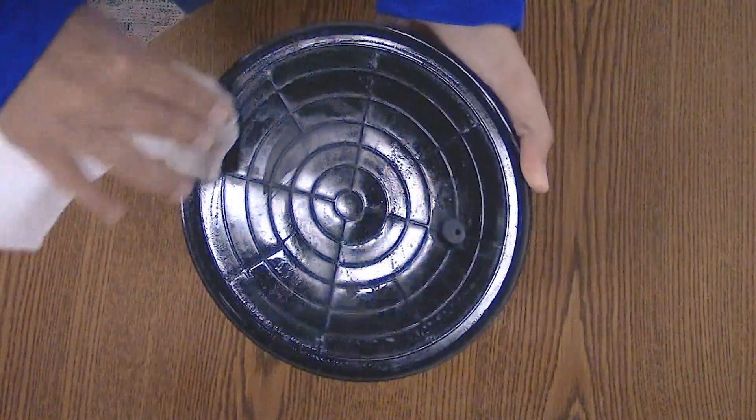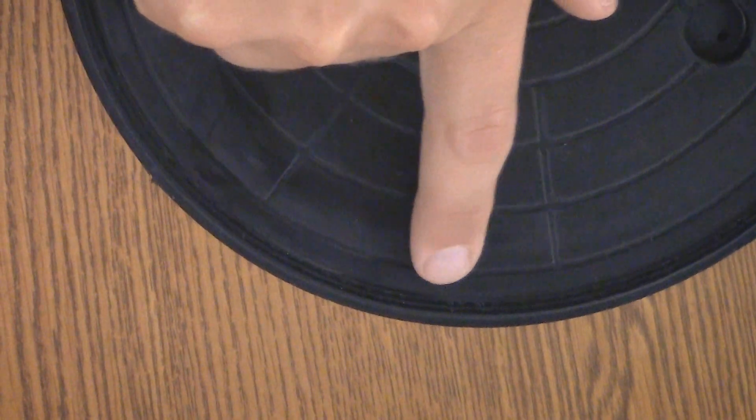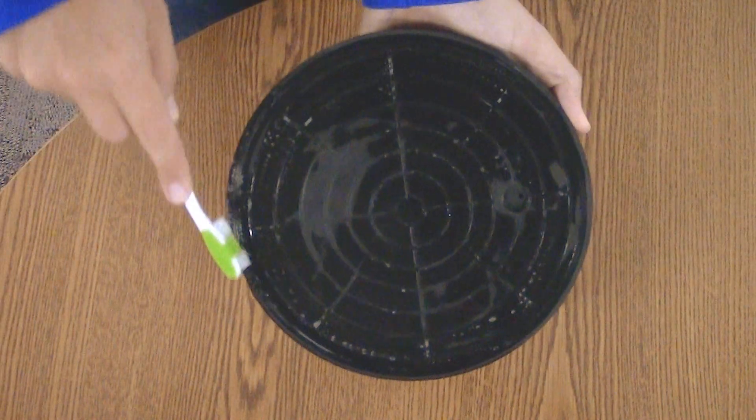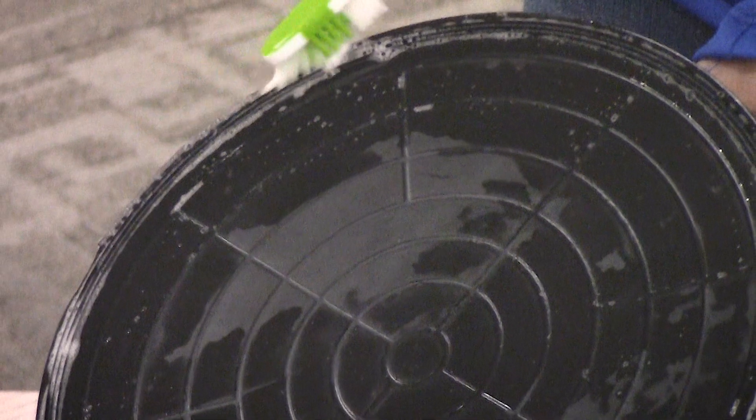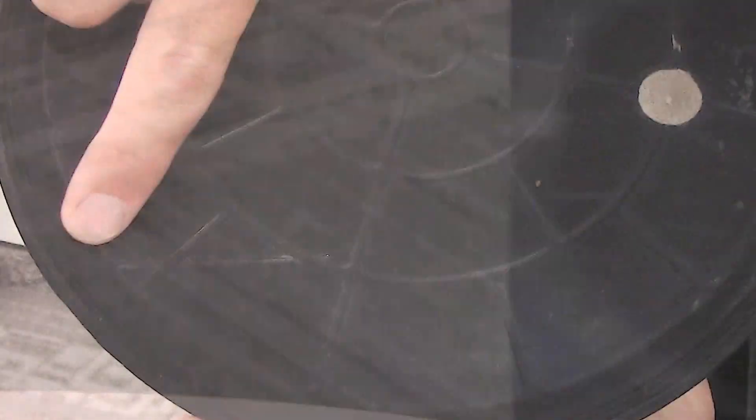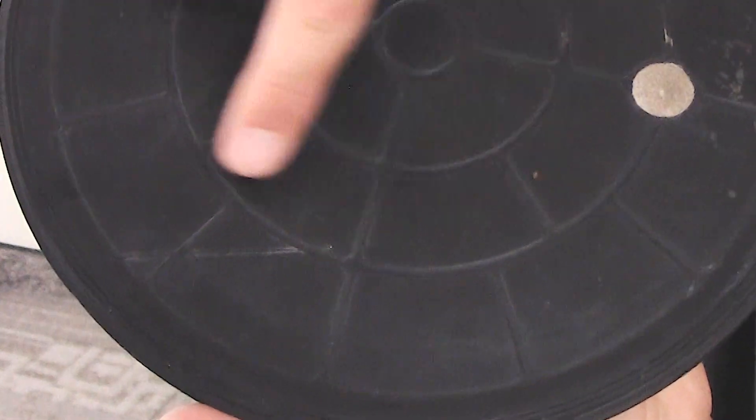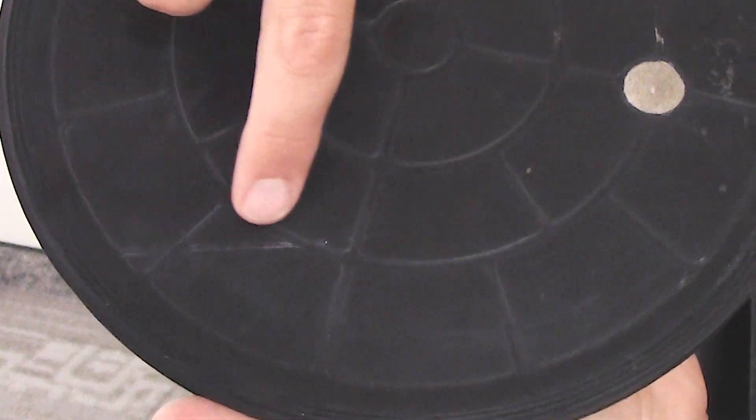Each vacuum pad is constructed with up to three raised ribs on the edge of the pad face. These ribs are known as sealing edges. A toothbrush can be used to clean them out. If the sealing edge becomes nicked or cut in any way, the pad will no longer maintain a vacuum seal and will need to be replaced.